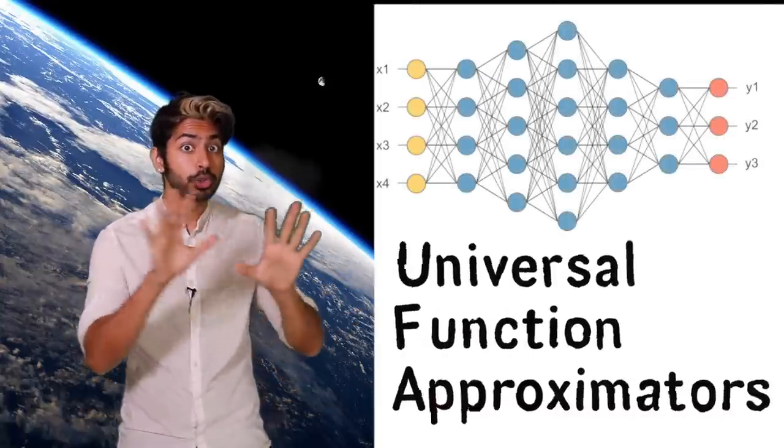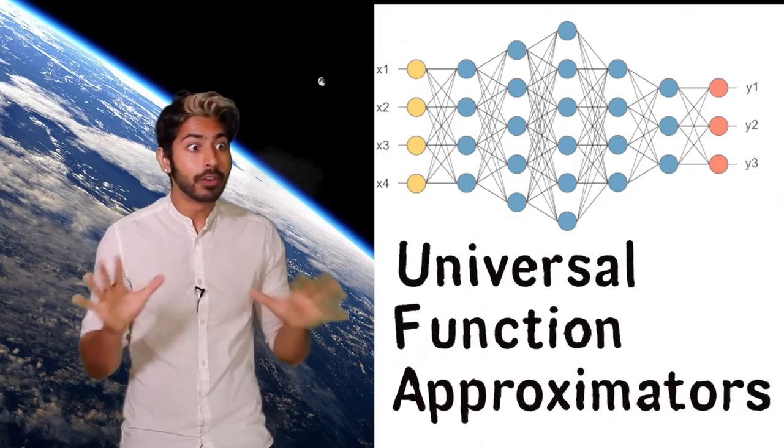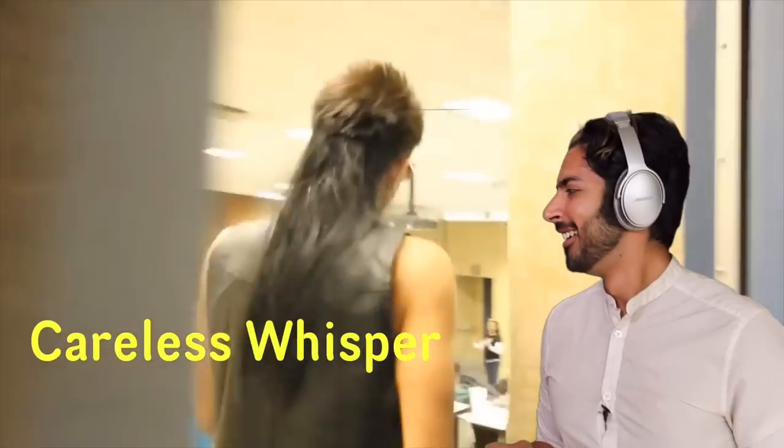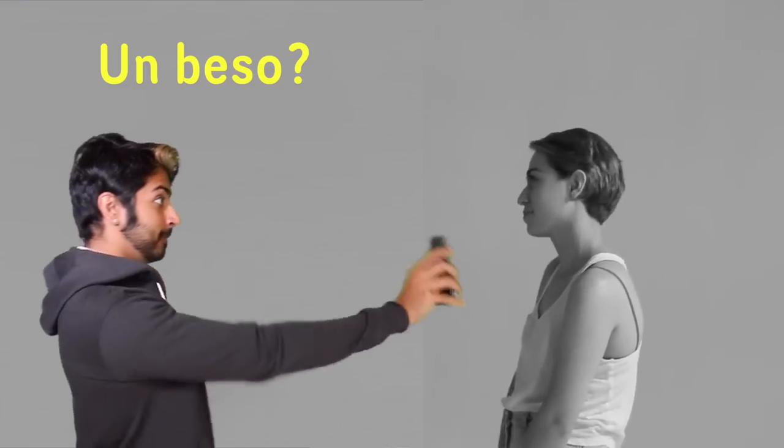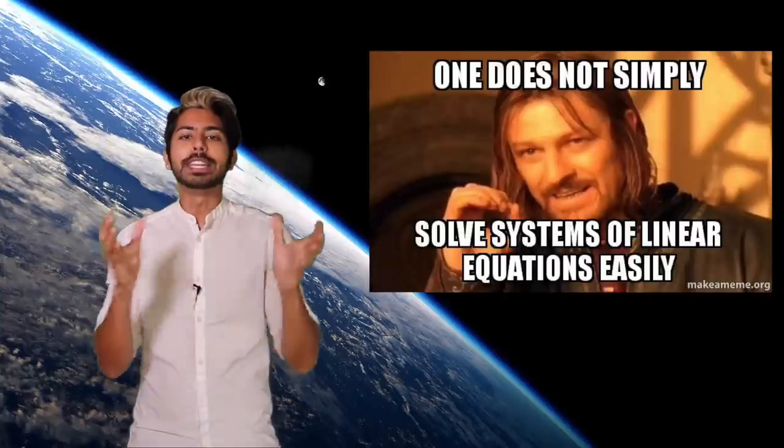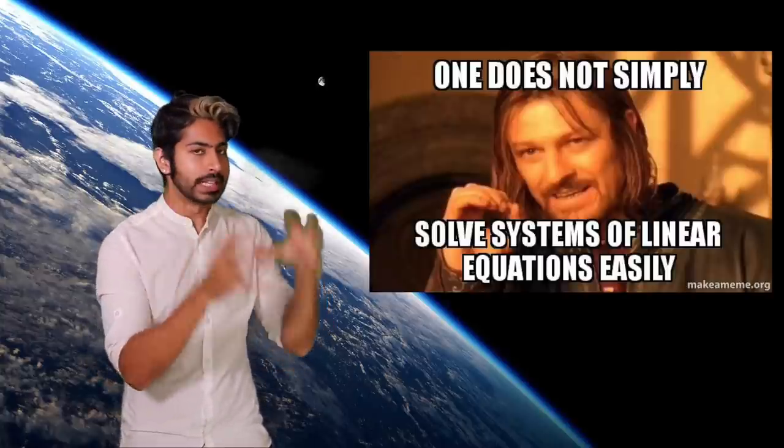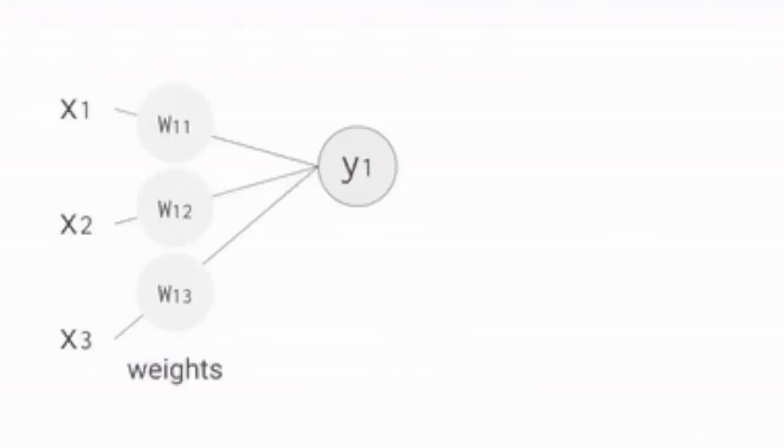We want to be able to represent any kind of function with our neural network, and neural networks are considered universal function approximators. That means that they can compute any function at all. Almost any process you can imagine can be thought of as a function computation: trying to name the song that you're hearing, translating Spanish to English, punching an evil clone of yourself. So we need a way to compute not just linear functions, but nonlinear ones as well.